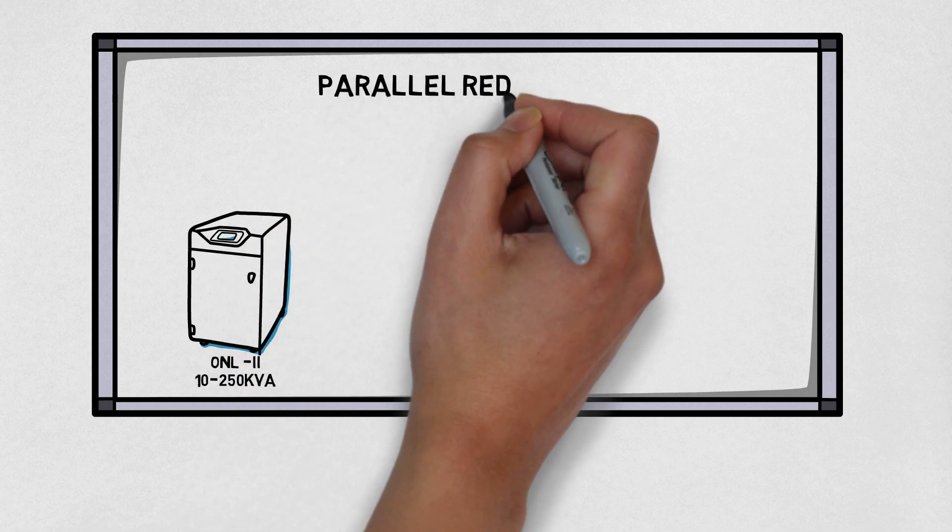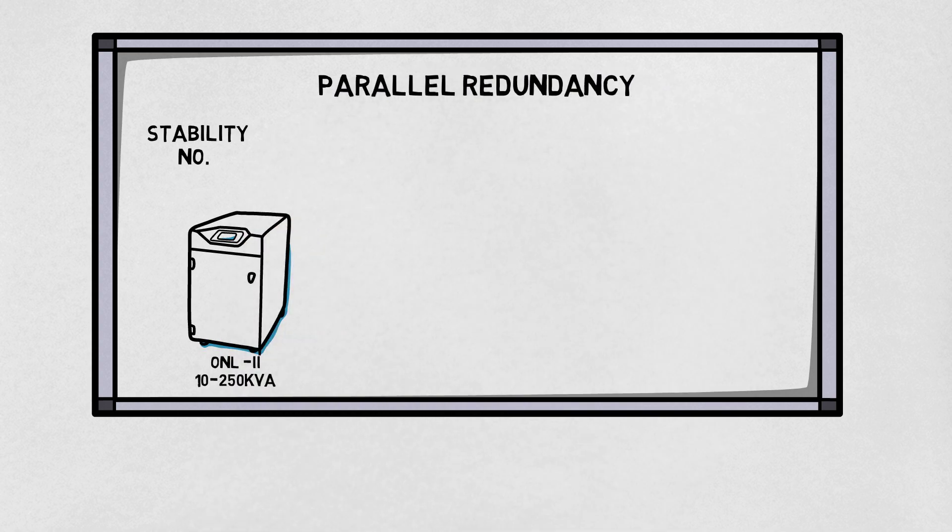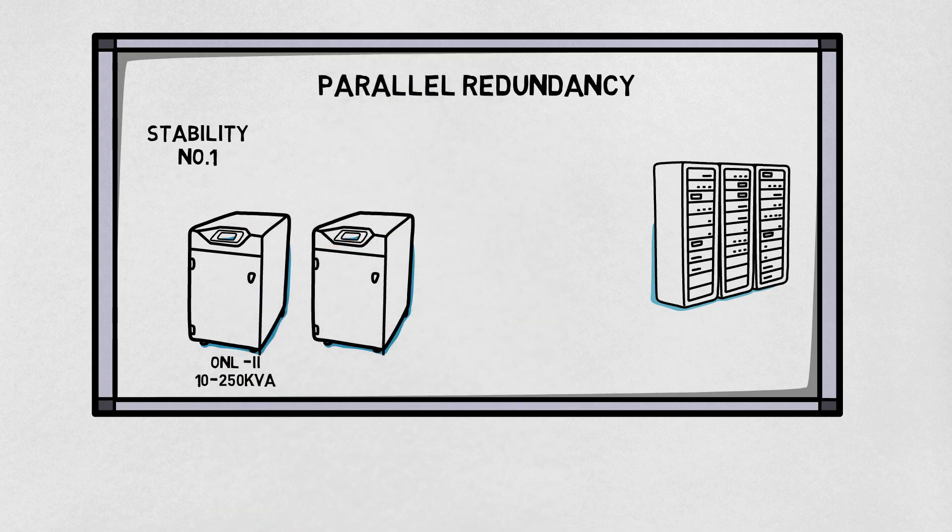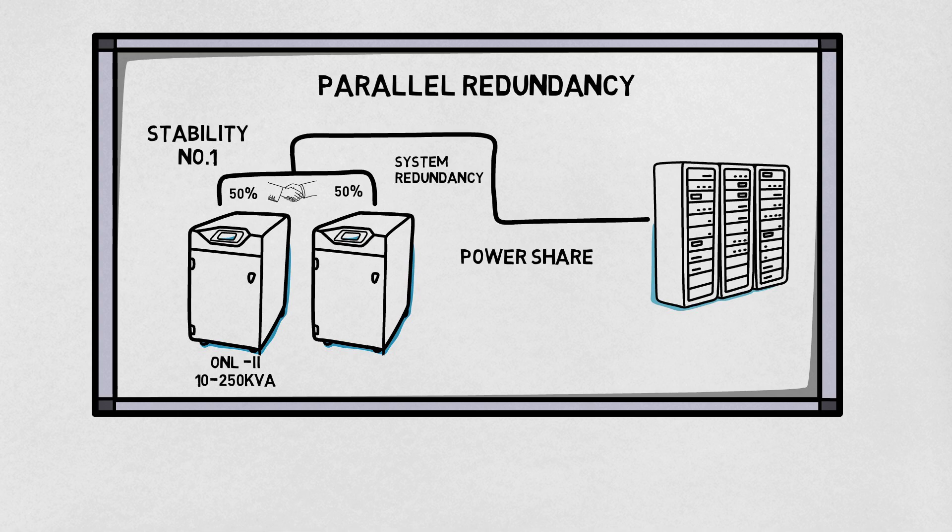Second, parallel redundancy. Critical operations need stability. Parallel redundancy combines multiple modules to support equipment, achieve system redundancy and power share, which balances load to each UPS module equally,